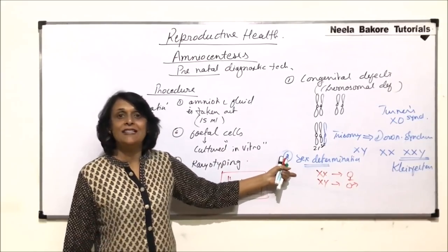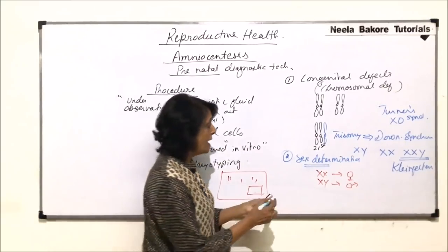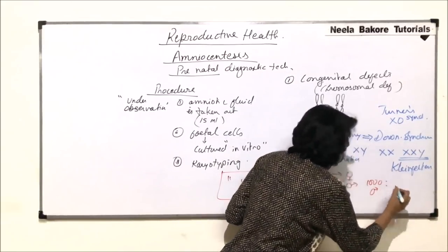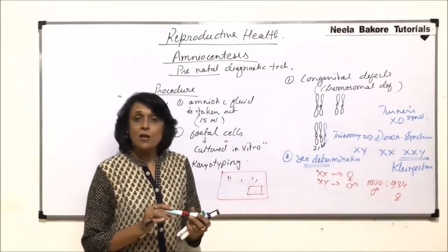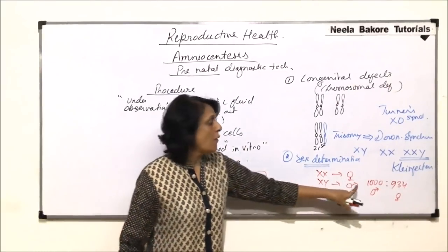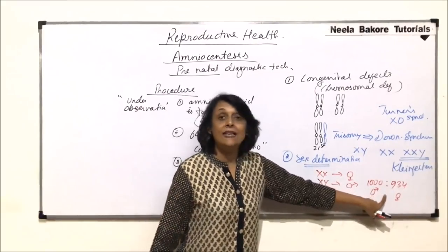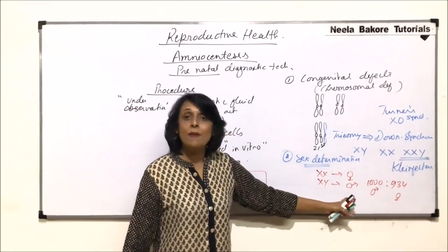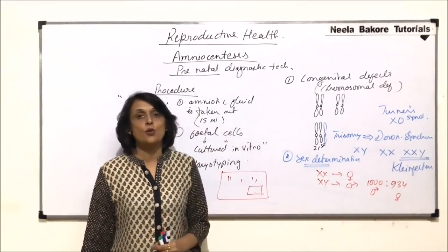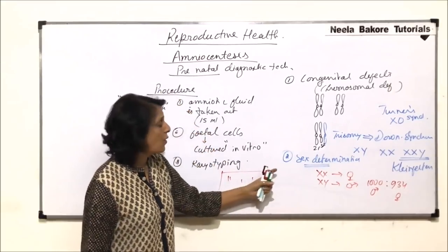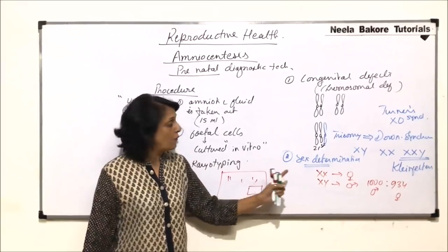Female feticide is causing serious sex imbalance. In a population of 1000 males there are only approximately 930–934 females, whereas for normal reproduction the ratio should be one to one. In certain states it is much worse — for 1000 males there may be only 800 or 700 females. This female feticide is negatively affecting the sex ratio in the population, which is harmful for any society. That is why sex determination by amniocentesis has been banned in India.